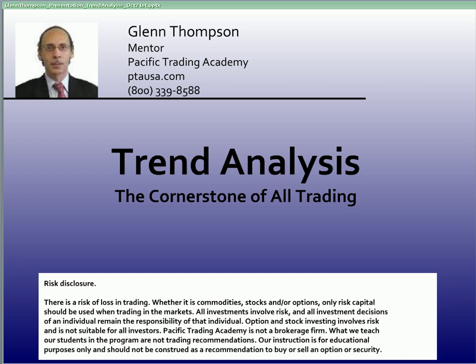I've spent years coming up with objective means by which one can define and differentiate trend. I always tell people there are only three things a market can do when we observe it on a computer monitor or screen — a flat surface. Looking at market activity, we're monitoring a system in a two-dimensional way. There are only three general directions of allowable motion when viewing price action. A market can go up, it can go down, or it can go sideways.